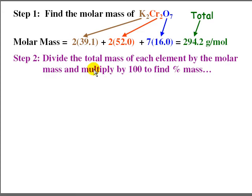The next step is we divide the total mass of each element by the molar mass and multiply by 100 to find the percent.